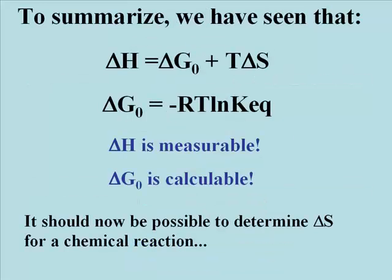To sum up: the change in enthalpy, or delta H, is a measurable quantity using a calorimeter, and the standard free energy change, or delta G0, is a calculable number using equilibrium constants plugged into the Boltzmann equation. Knowing delta H and delta G0, it is a simple matter to calculate the entropy change for the reaction.